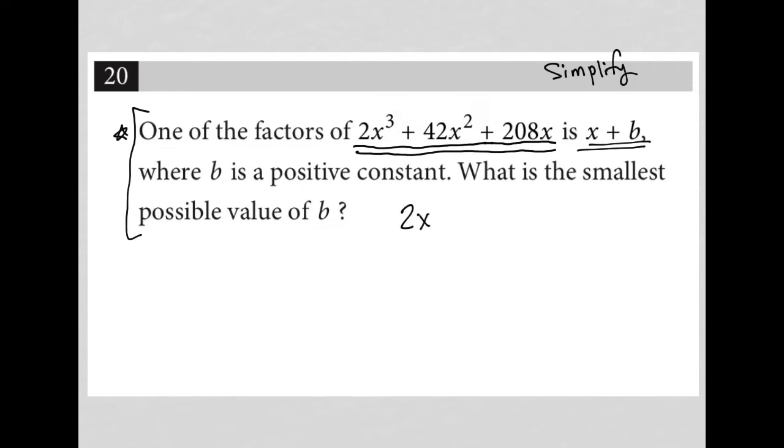So I'm going to take the expression 2x³ + 42x² + 208x and simplify it. The very first thing I can do is pull out a greater common factor, which would be 2x in this case. So I'd have 2x(x² + 21x + 104). Now I have this trinomial inside parentheses that's been simplified by pulling out a GCF.